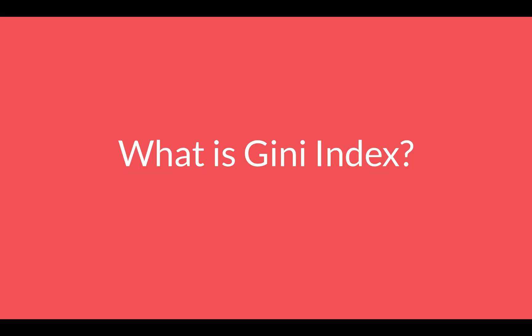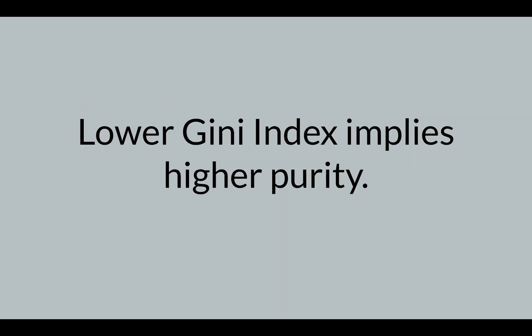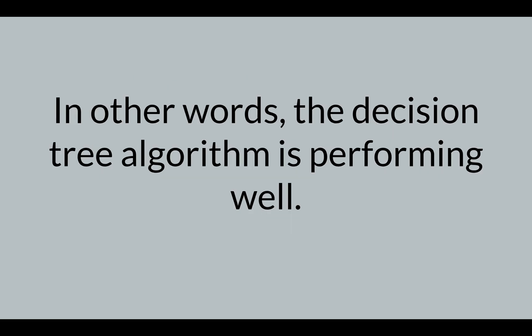So let's understand what is Gini Index, how it is used and how it is calculated. Gini Index is used to quantify the purity of a node in a decision tree. A lower value of Gini Index implies higher purity of the node, and higher purity means our splitting criteria is doing a good job in separating the classes.